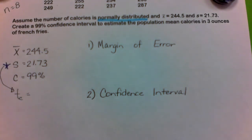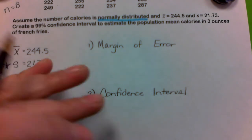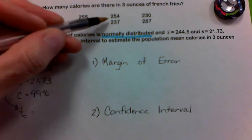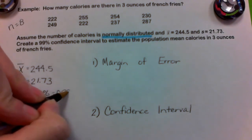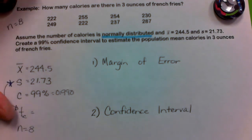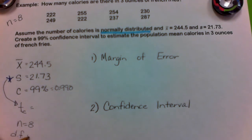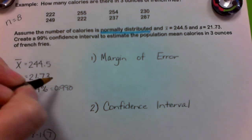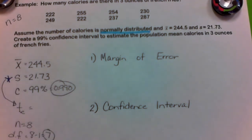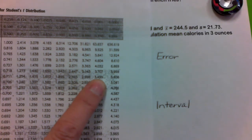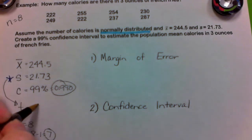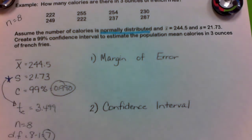Pay attention to whether sigma is known or not. I also need N — the sample has eight values, so N equals 8. To use the Student's T distribution, I need 0.990 as a decimal and the DF, which is N minus 1, or 7. Seven and 0.990 gives me T sub C. Going to row 7, column 0.990 — that's the second to last column — gives 3.499. So T sub C is 3.499.